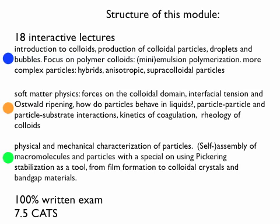We're going to take that further to the cutting edge, which is anisotropic particles and supracolloidal particles — particles made from particles. To understand this we need to do a little bit of soft matter physics, to see what's different when we go into the colloidal domain. What happens if we make things small? Can we still think gravity dominates, or are there other forces that become dominant and influence processes like self-assembly and how these things behave in a liquid and interact with substrates?